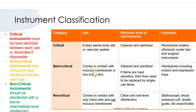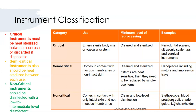Semi-critical instruments contact mucous membranes and saliva but not necessarily blood — examples include handpieces and impression trays. These should also be heat sterilized; if heat-sensitive, replace with single-use items. Non-critical instruments only contact intact skin and do not enter the mouth — examples are blood pressure cuffs and bib chains. Non-critical items can be disinfected with low-to-intermediate level disinfection wipes. Memory trick: Critical = C for curette (cuts through mucous membrane); Semi-critical = S for stroke (just touches the mucous membrane); Non-critical = non-contact (doesn't touch the mouth).